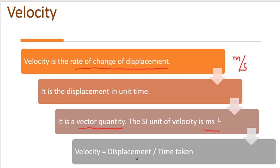Velocity has the formula: displacement divided by time taken. Displacement has the unit meter, and time has the unit seconds. So velocity has the unit m/s.